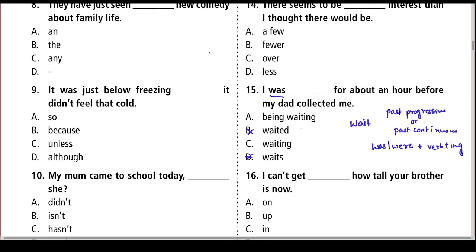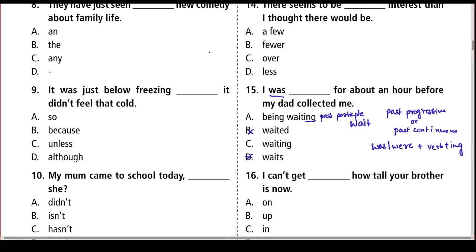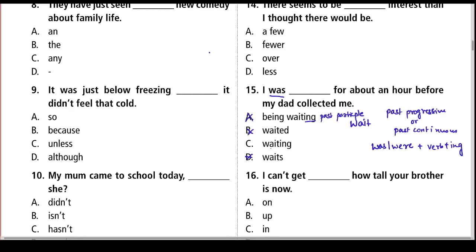In passive voice, it often happens that with our auxiliary verb we do not use the '-ing' form — instead we use the past participle or third form of the verb, which in the case of 'wait' is 'waited.' If this had been 'being waited' we might have considered it, but the option says 'being waiting,' which is absolutely incorrect. So we cannot use option A, and the only one left is option C — 'waiting.'